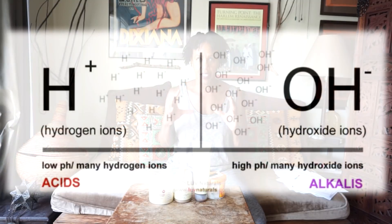What I'm going to be talking about today is pH. What exactly is pH? pH is something that is very important in the natural hair community. pH is the potential of hydrogen — it means the number of particles, basically ions, in a water-based solution.